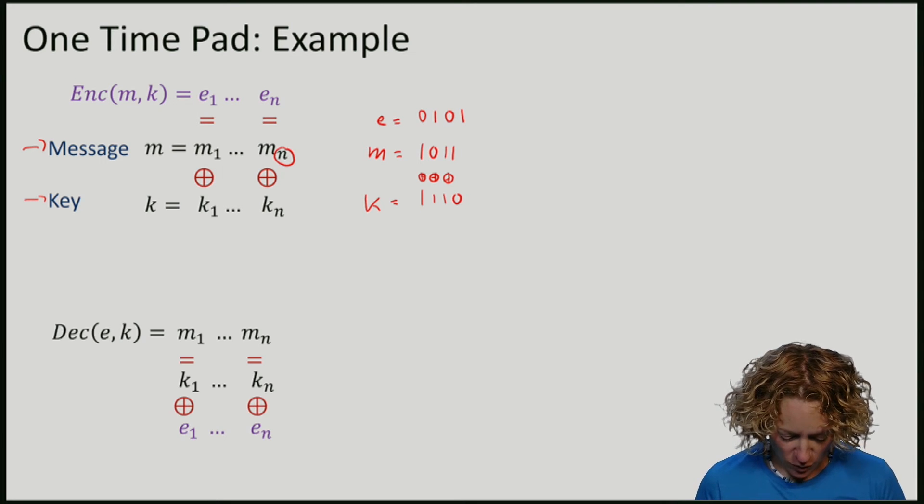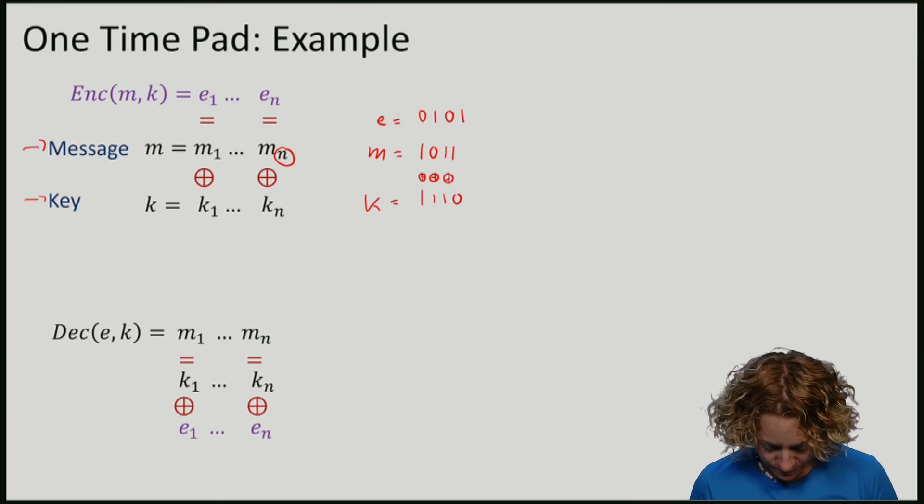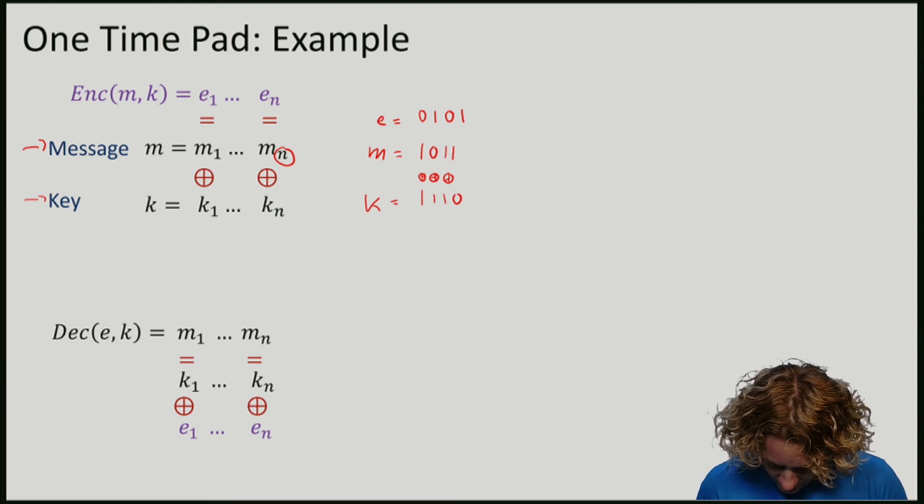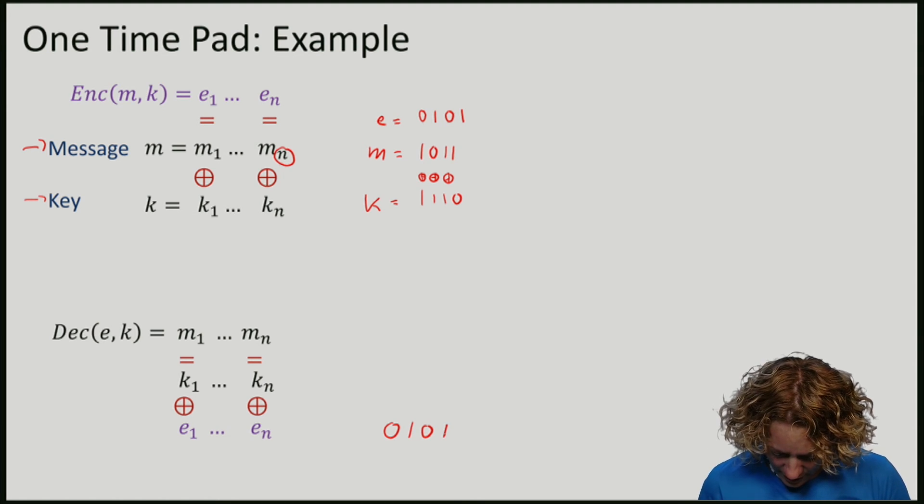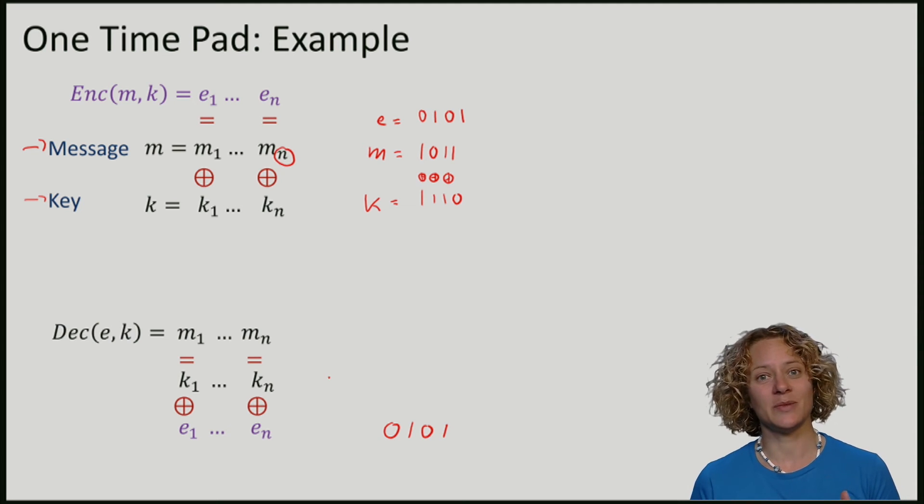So let's have a look at how Bob decrypts. We start with the encrypted text which is just computed to be 0, 1, 0, 1, and Bob has the same key as Alice.